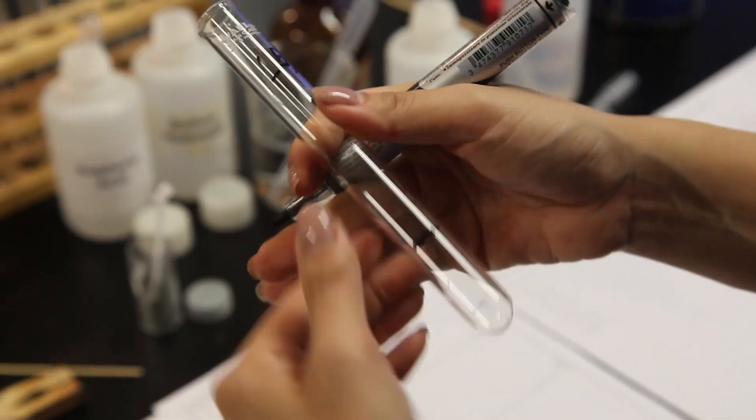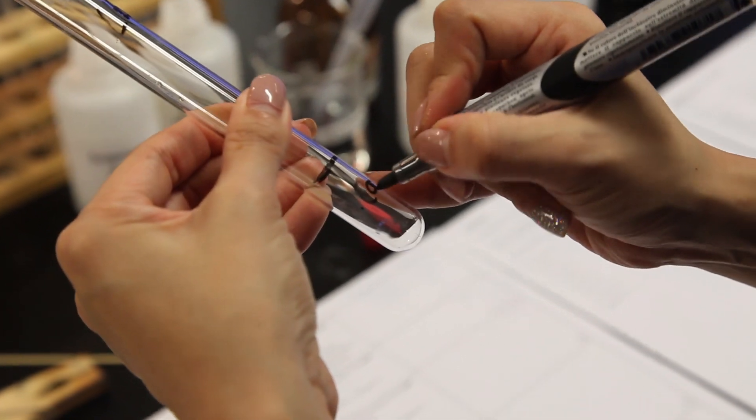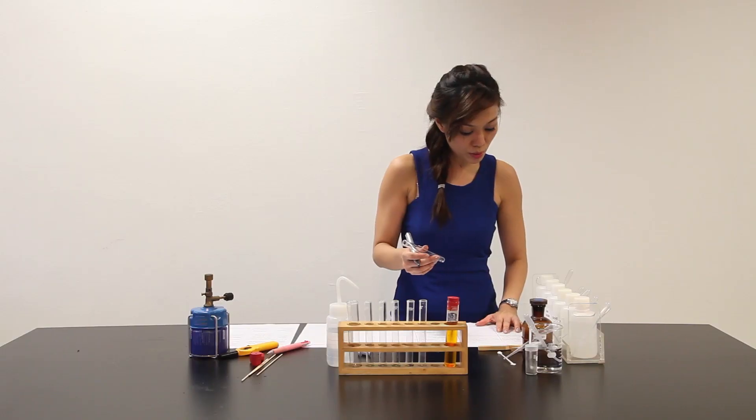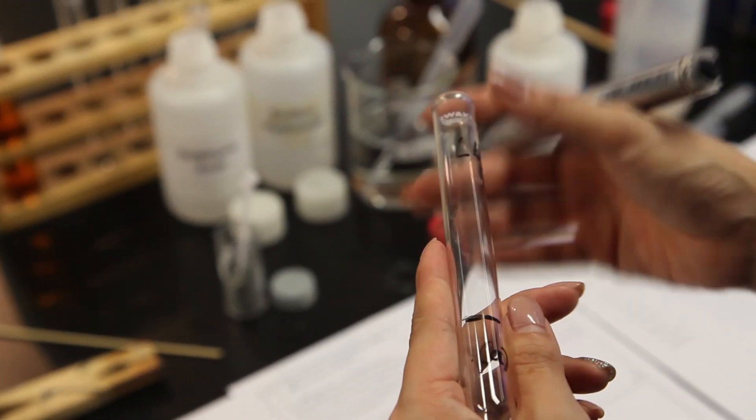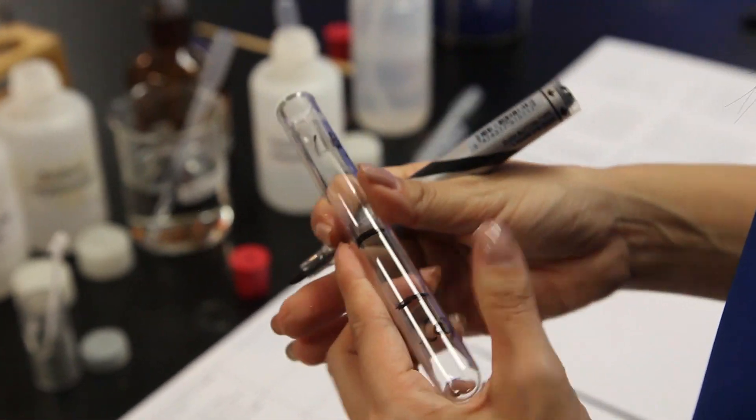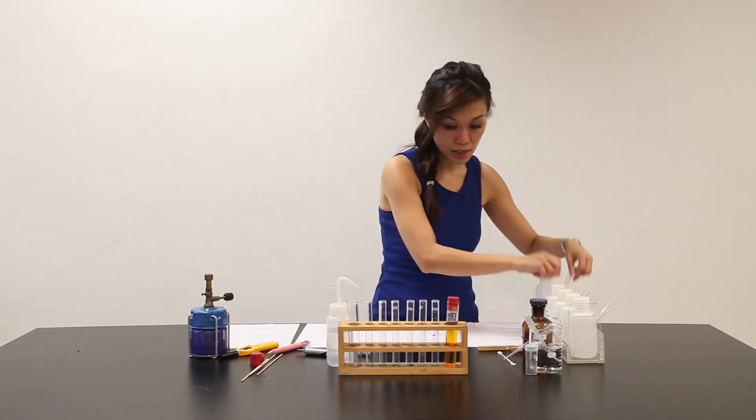4 cm³ of part A in a clean test tube. To this test tube, add about 4 cm³ of sulfuric acid and another 4 cm³. And let me take out my H2SO4 from here.